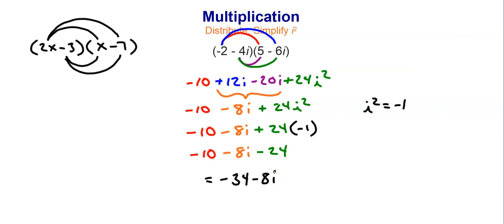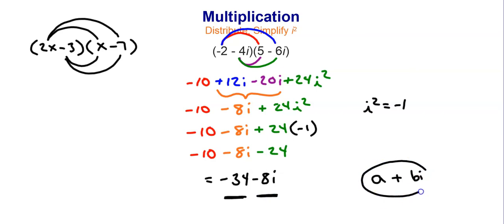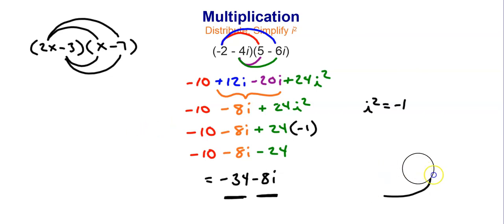Notice that a complex number times a complex number gives you a complex number. A complex number is written in the form a plus bi — a real portion plus an imaginary portion. If you multiply a complex number times a complex number and get something different, like three terms, then you probably haven't simplified far enough.